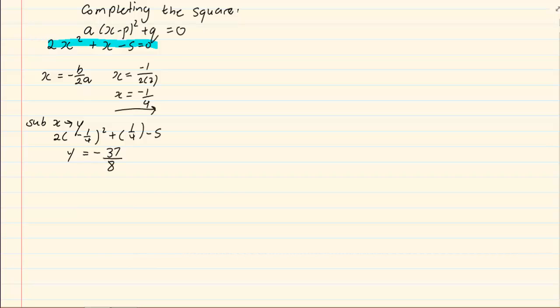Now to rewrite it, the x is your p and the y is your q. So we have 2 coming from our original question into x minus and then we have minus a quarter all squared minus 37 over 8 is equal to 0. Now remember, the reason it is a negative is because the positive times the negative would give us a negative.